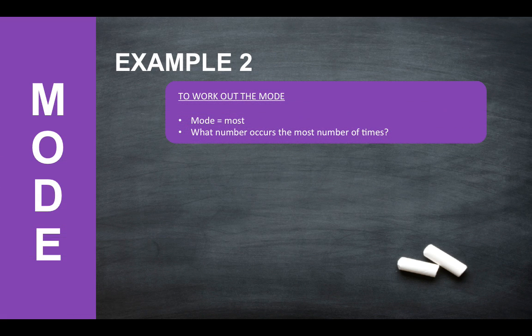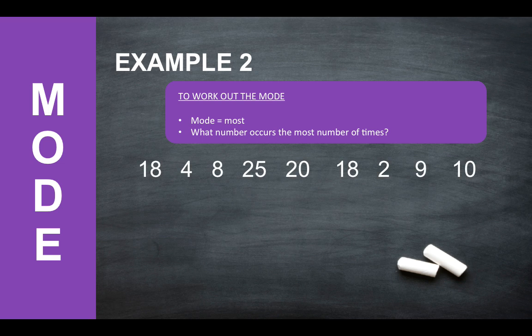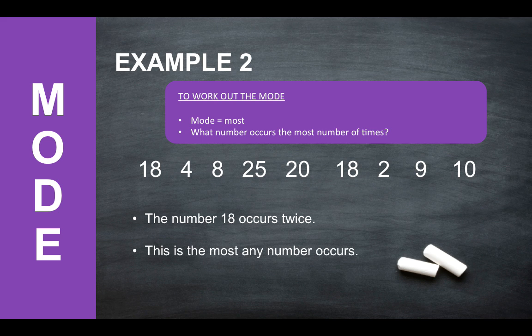Okay so how do you work out the mode? So the mode is basically asking the most numbers. What number occurs the most number of times? So here's our set of data. So we've got 18, 4, 8, 25, 20, 18, 2, 9 and 10. So the number 18 occurs twice. So this is the most any number occurs so therefore 18 is the mode of this set of data.